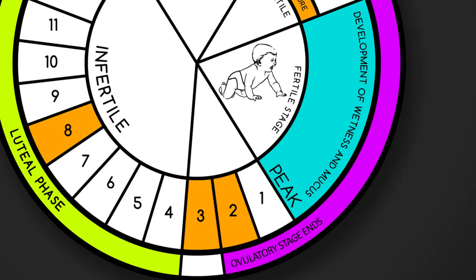The ovulatory stage ends 24 to 36 hours after ovulation because the ovum can live for one day. The woman will sense the end of the ovulatory phase when she no longer feels wet or slippery at the vulva.